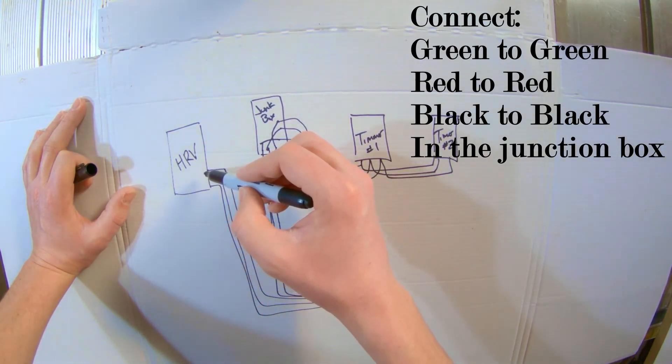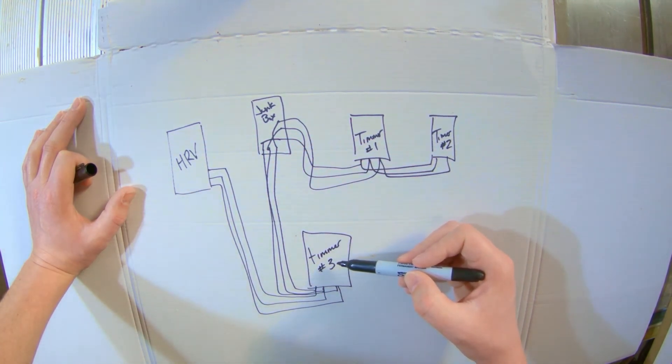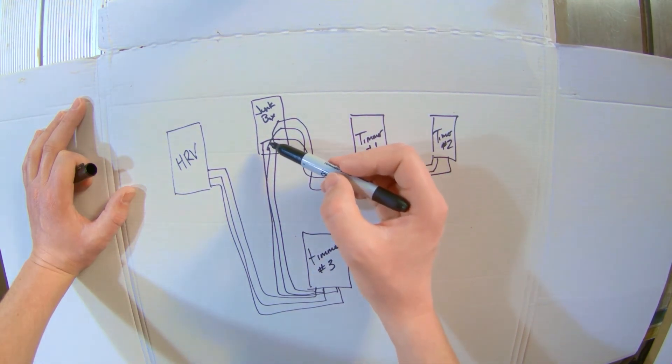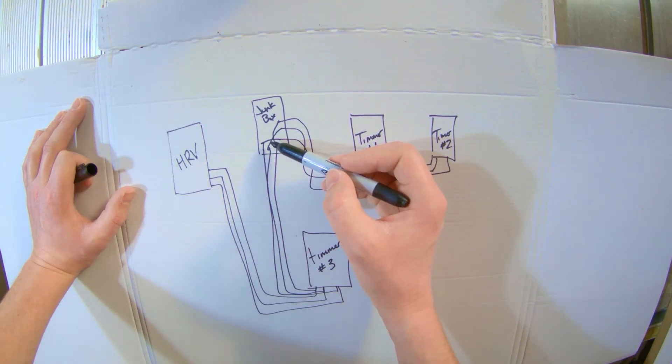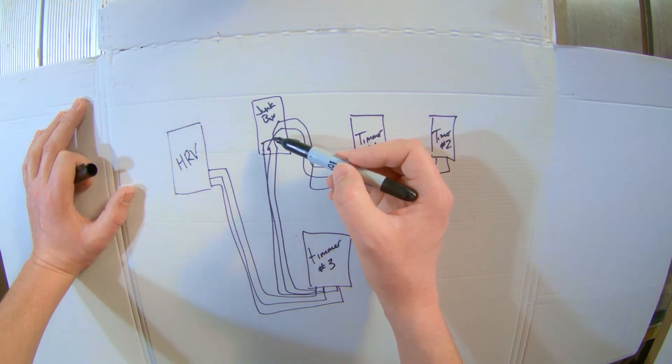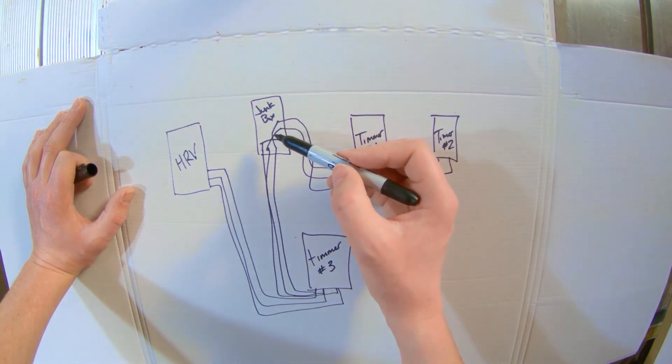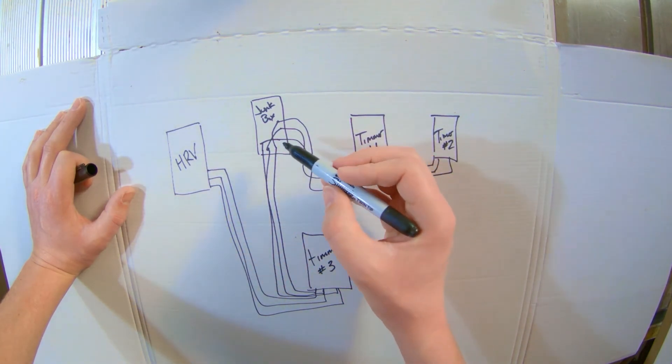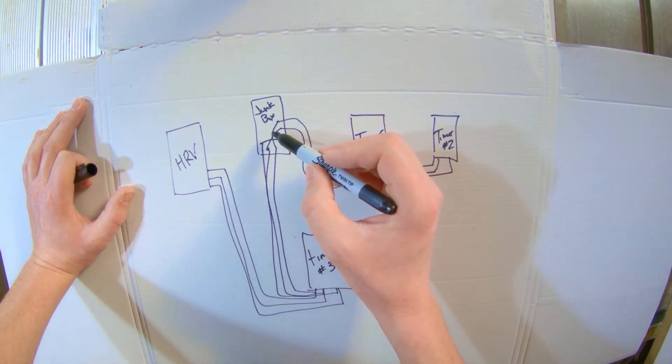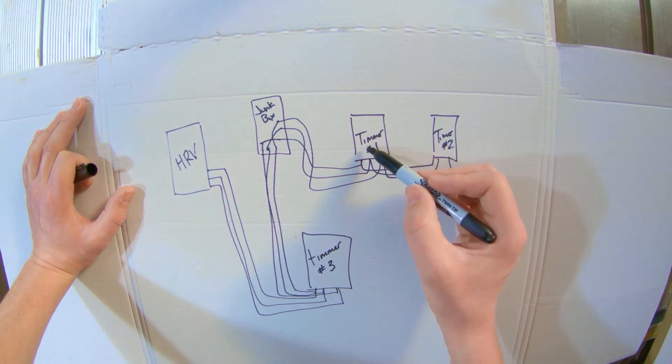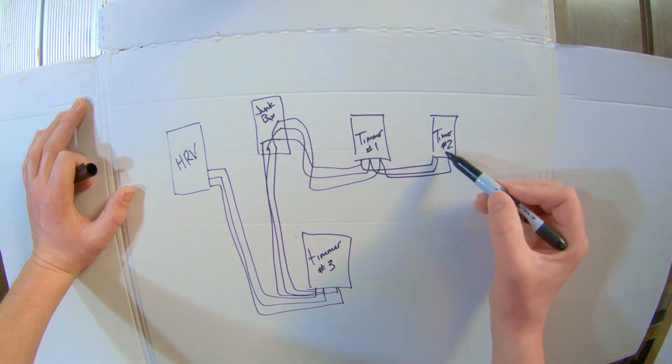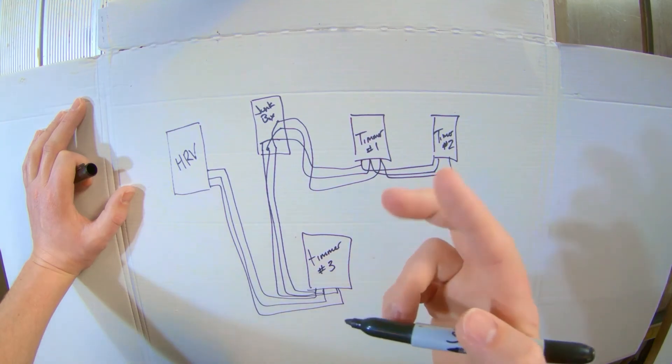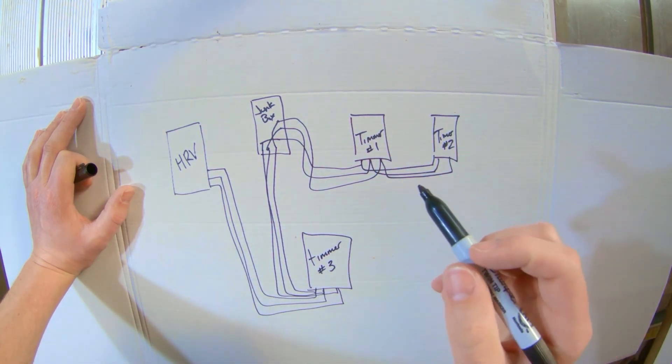And now you've created this circuit coming out of the HRV to timer three, back to this junction box in your mechanical room that's accessible at all times. Because anytime you're joining wires, it needs to be in a junction box that's accessible at any time. So surface mounting that in your mechanical room is pretty convenient. You can put it right next to your HRV. And then you've got wires going to timer one and then to timer two.